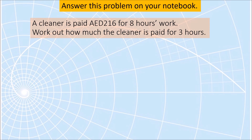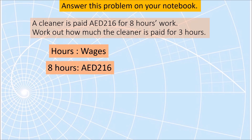Let's check your work. The problem says a cleaner is paid 216 dirhams for eight hours of work — work out how much the cleaner is paid for three hours. We are given the ratio of hours worked to wages: the cleaner is paid 216 dirhams for 8 hours, so 8 is to 216. What we want is how much is paid for 3 hours.